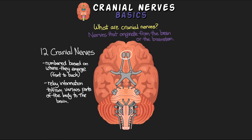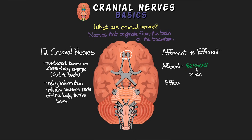In order for this relay of information to take place, we have two different types of neurons seen with these cranial nerves: afferent and efferent. Afferent neurons are sensory neurons that carry signals from various sensory stimuli back towards the brain. Efferent neurons are motor neurons that carry signals away from the brain to have some effect on muscle or other target cells. Some cranial nerves are afferent, some are efferent, and some are a combination of both.